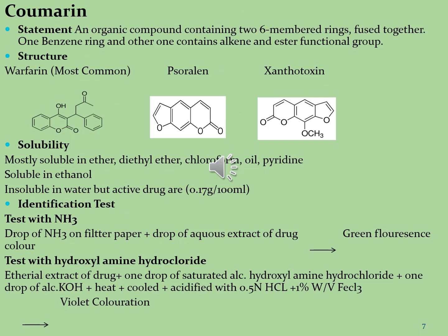Let's see what are coumarins. Coumarins are organic compounds containing two six-membered rings fused with each other — one benzene ring and the other containing alkene and ester functional groups. You can see three examples of coumarin molecules: warfarin, soralene and xanthotoxin.